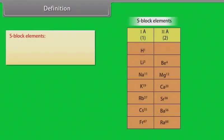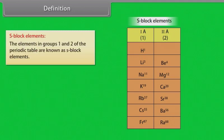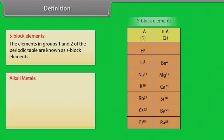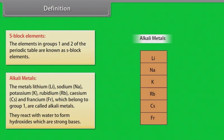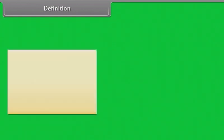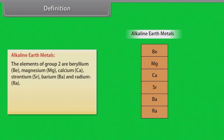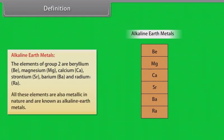Definition. S-block elements are the elements in group 1 and 2 of the periodic table. Alkali metals — lithium, sodium, potassium, rubidium, cesium and francium — belong to group 1. They react with water to form hydroxides, which are strong bases. Alkaline earth metals: the elements of group 2 are beryllium, magnesium, calcium, strontium, barium and radium. All these elements are metallic in nature and are known as alkaline earth metals.